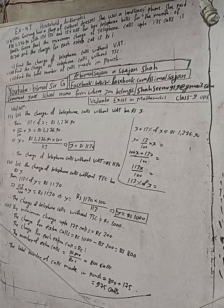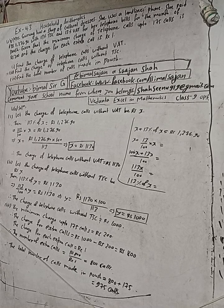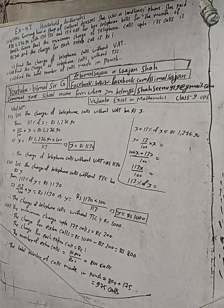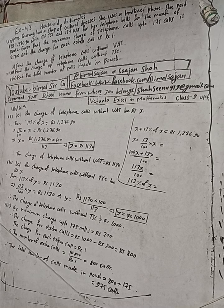She paid Rs 1,276.90 with 13% TSC and 13% VAT for her telephone bills for the month of Poush — Poush mahina ko bill ko lagi 13% VAT ra 13% TSC hi lagar jama kati tire kothi hoda 1,276.90 paisaa tire kothi ho. Given that the minimum charge of telephone calls up to 175 calls — 175 call samma ko minimum charge kati chha — Rs 200, and the charge for each extra call is Re 1.